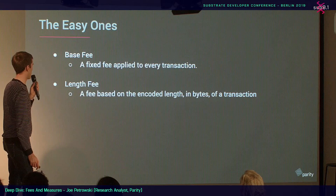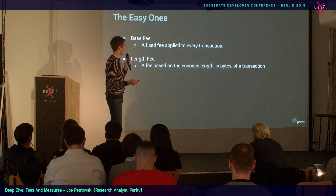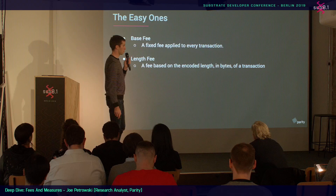The easy ones are base fee and length fee. A base fee is just a fixed fee applied to everything. A length fee is based on how a transaction gets encoded — it has a length in bytes, and you set a per-byte fee. Those are pretty simple and intuitive.